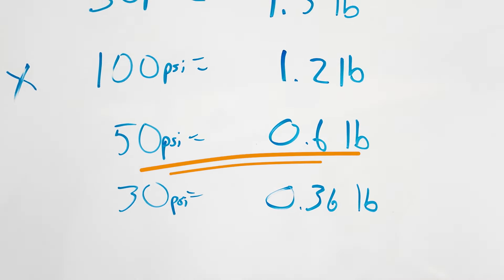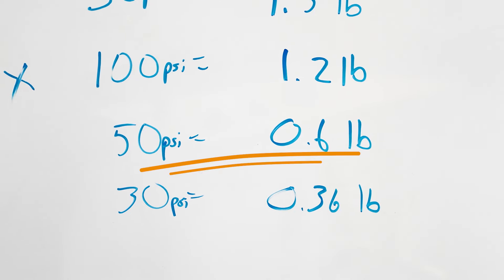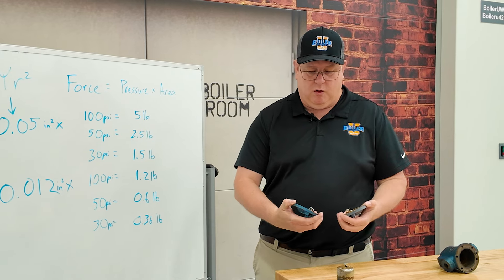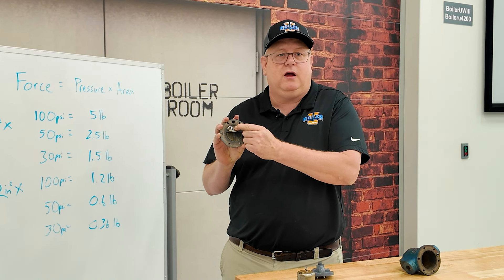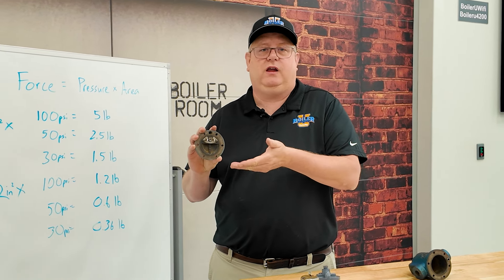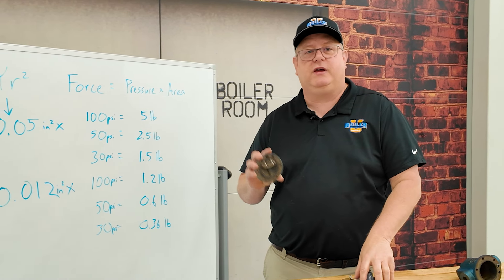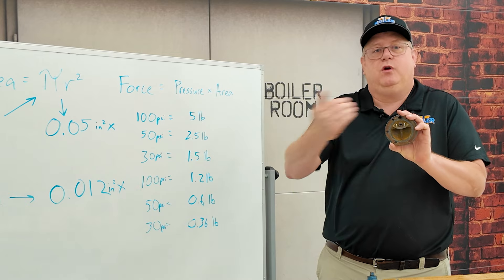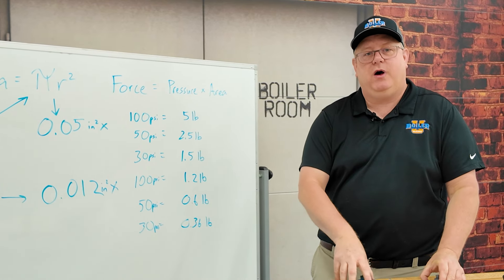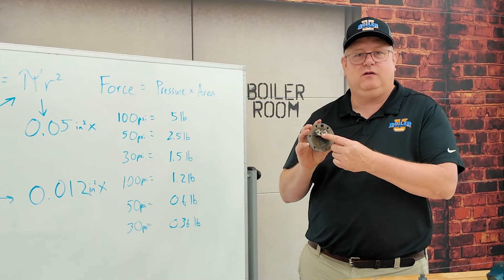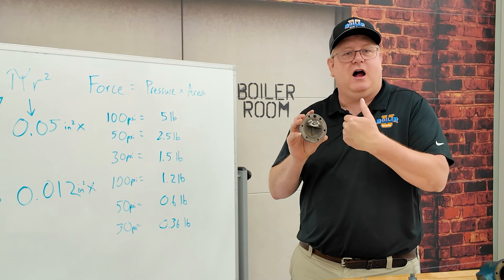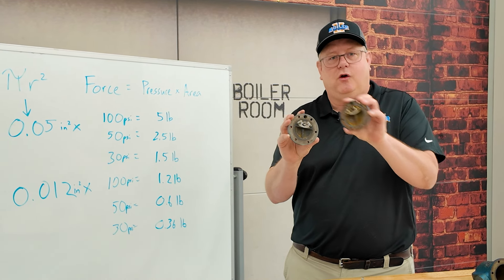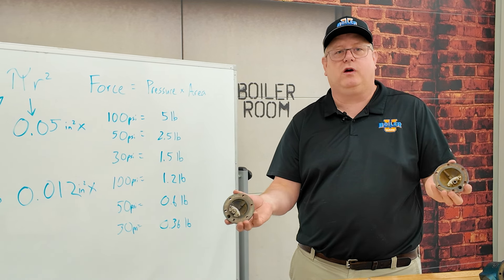I see eighth inch orifices on 100 PSI applications all the time and it works fine. So why don't we just use the smaller orifice on everything? Because we're going to lose capacity. On a low pressure application, we need a larger orifice so we can remove the condensate promptly. But on a higher pressure application, we can remove the same amount of condensate because we've got more differential. Having the right internal orifice is going to allow the trap to work correctly.